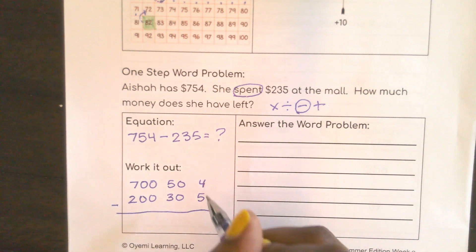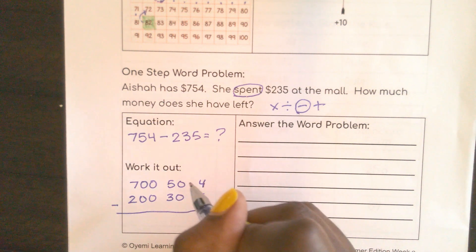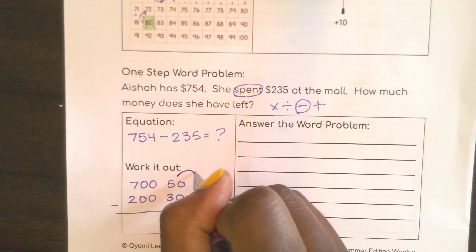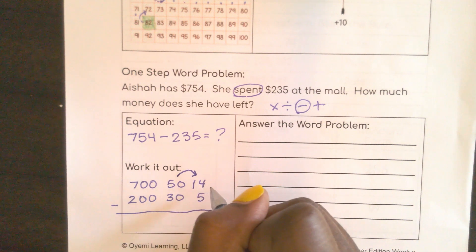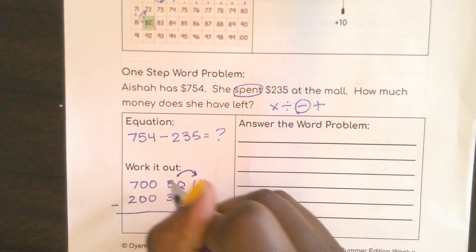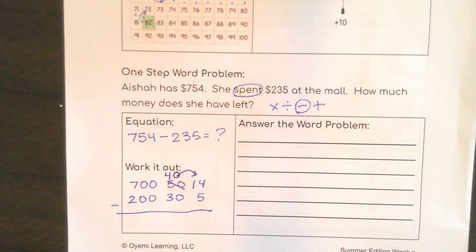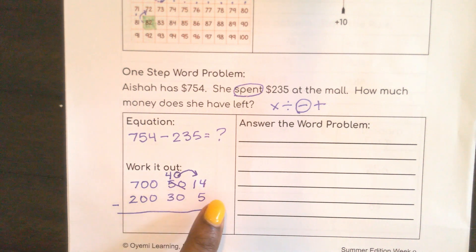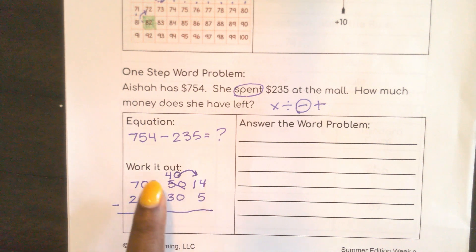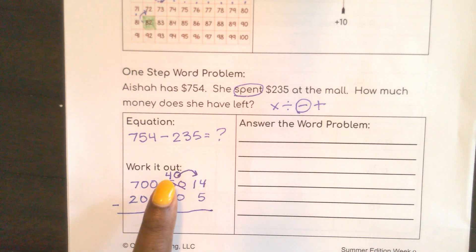So four minus five. If I have four cookies, can I eat five of them? I cannot. So I have to regroup this number. I moved a 10 here from the tens place, and now I have 40. The reason why is because this was 54, so I can regroup it and do 40 plus 14, and that still equals 54.